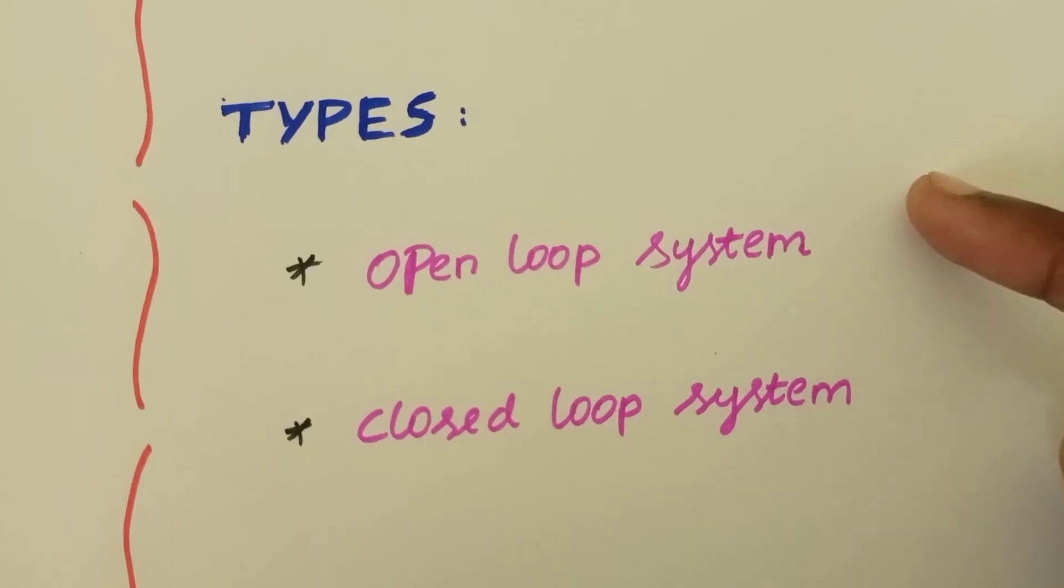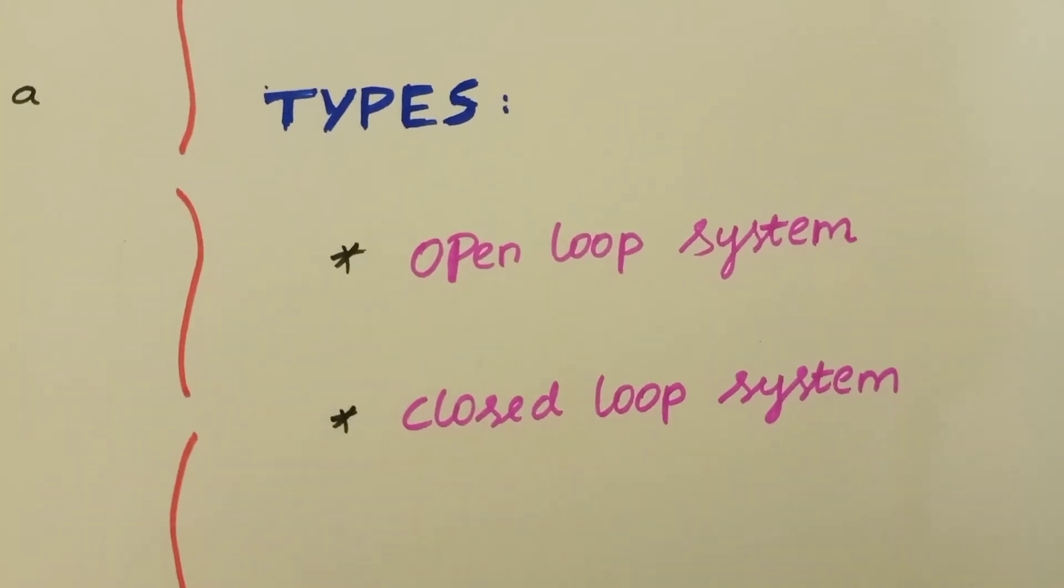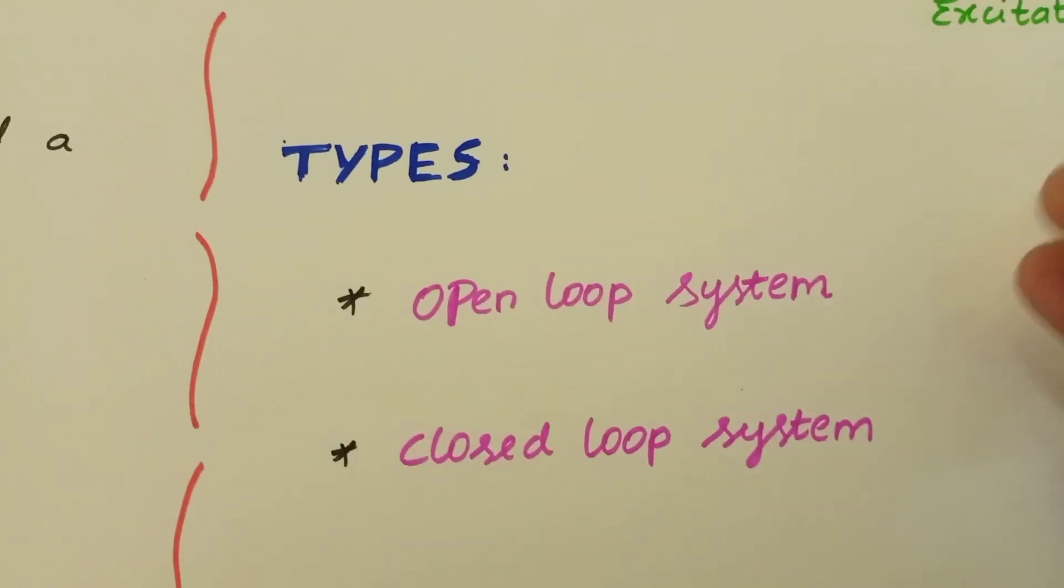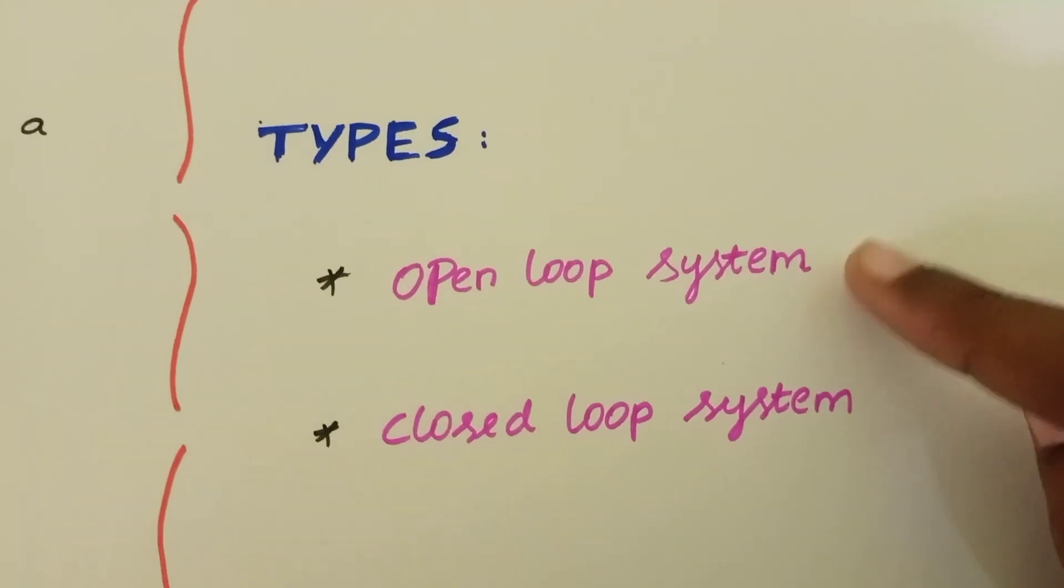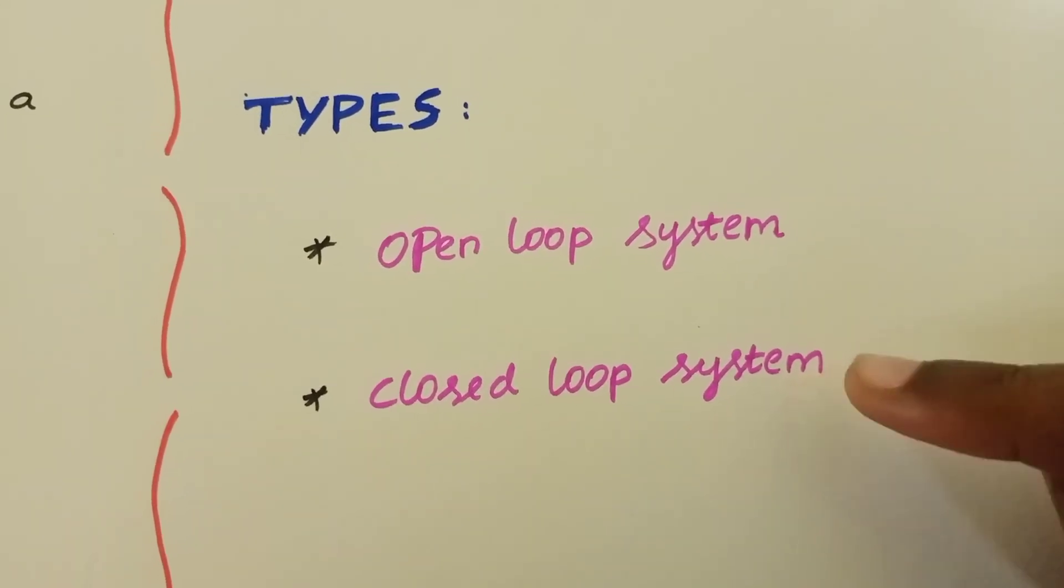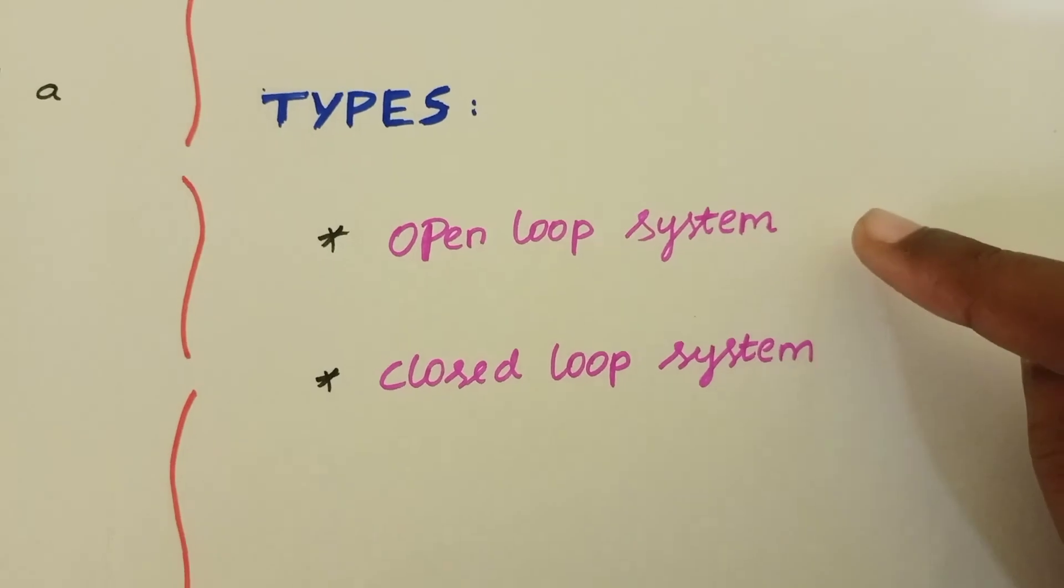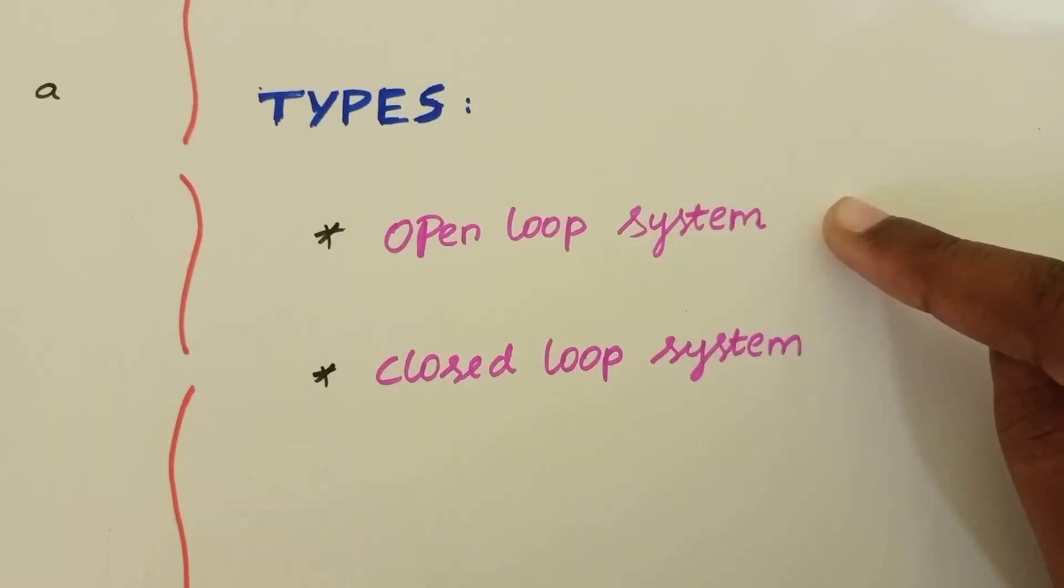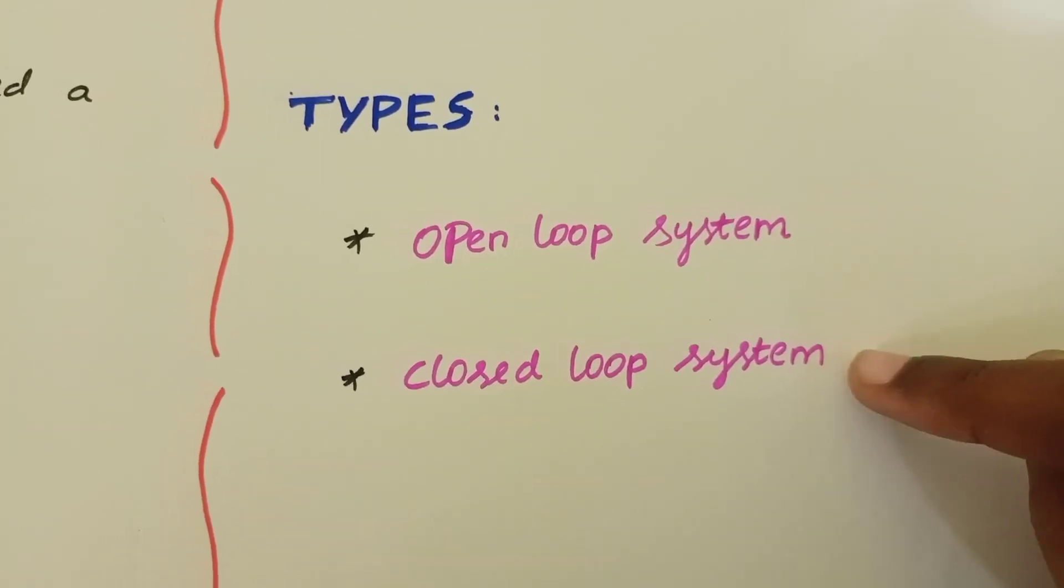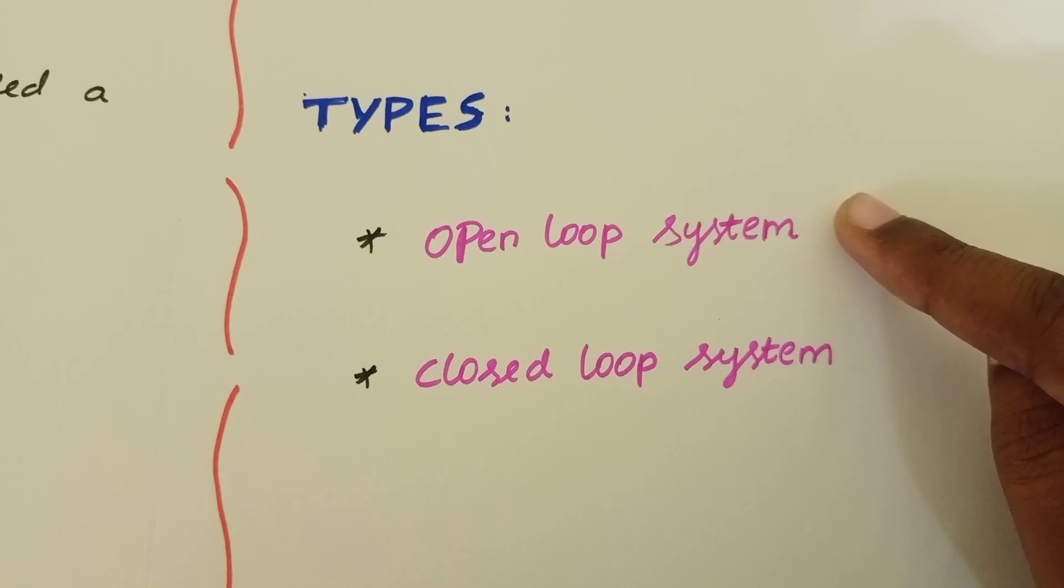Open loop system means the output quantity cannot be controlled. For example, a normal fan. Closed loop system means the output quantity can be controlled, like an AC. This is a specialized regulator used for control in closed loop systems.